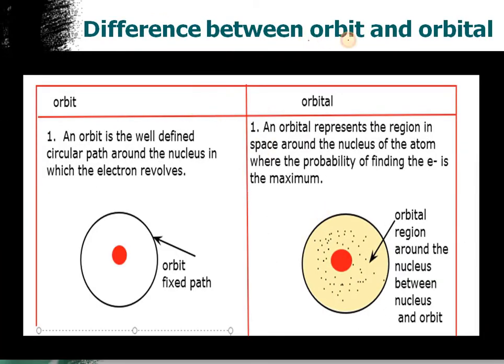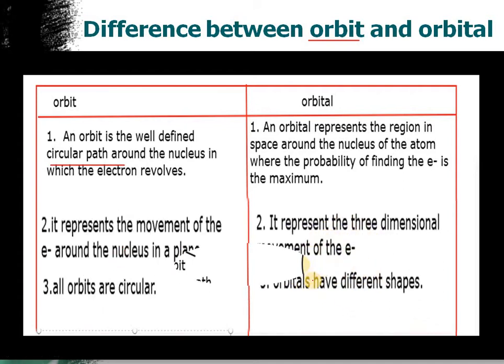Now we will do the difference between the orbit and the orbital. The first point: it is a circular path around the nucleus in which electrons revolve, it is a fixed path. If I talk about the orbital, it is a region in which electrons revolve, a space between the nucleus and the orbit.